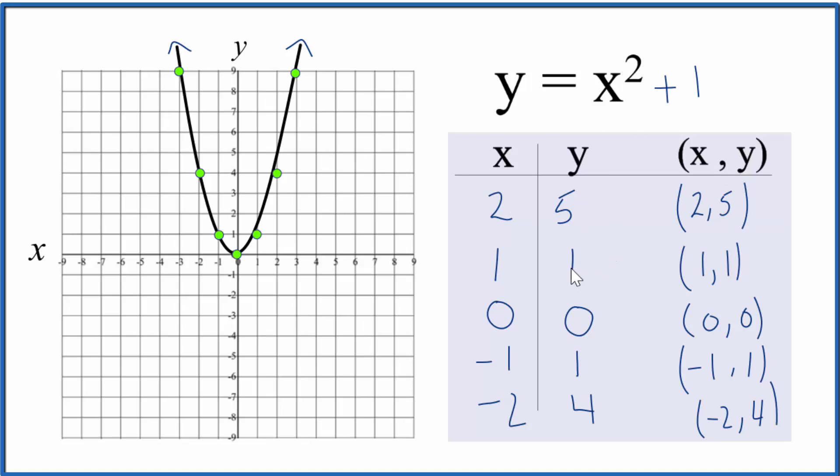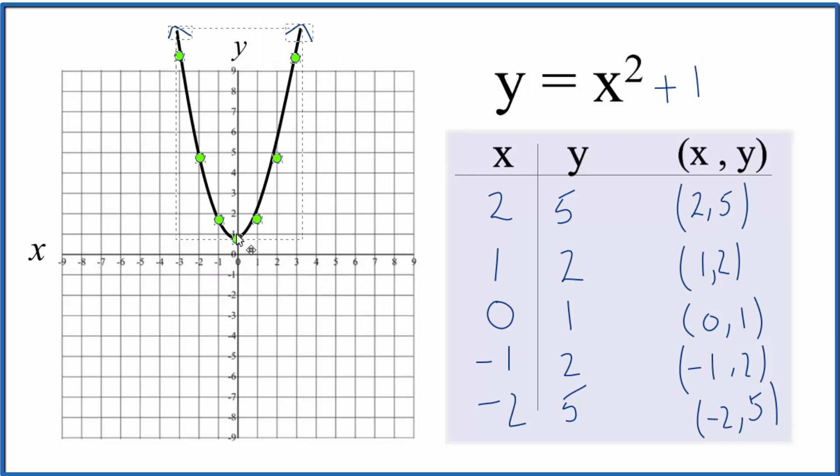And so on for these numbers here. So the result of this is all we have to do is take our graph, because each y increased by 1, and move it up 1. And that's the graph for y equals x squared plus 1.